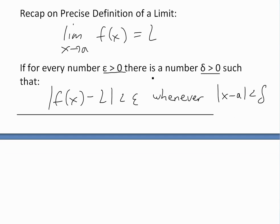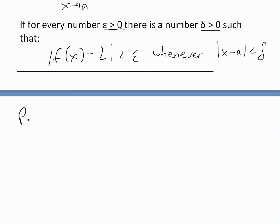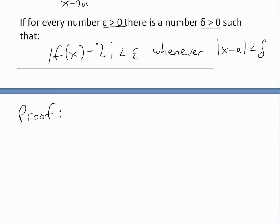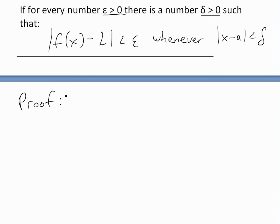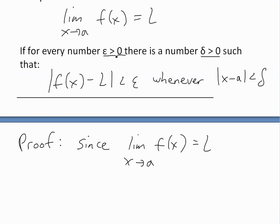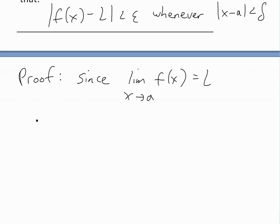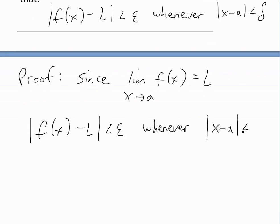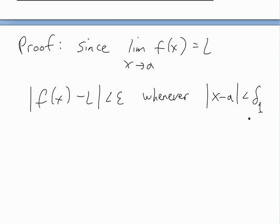So the idea of proving the squeeze theorem is to apply this precise definition in such a way that the squeeze theorem conclusion follows. Now, first, let's see what we're given. We're given that the limit as x approaches a of f(x) equals L. So if we're given this limit, then the precise definition has to apply, and there must be a number delta such that the absolute value of f(x) minus L is less than epsilon, whenever the absolute value of x minus a is less than delta — we'll call this delta one, since this is for one limit.